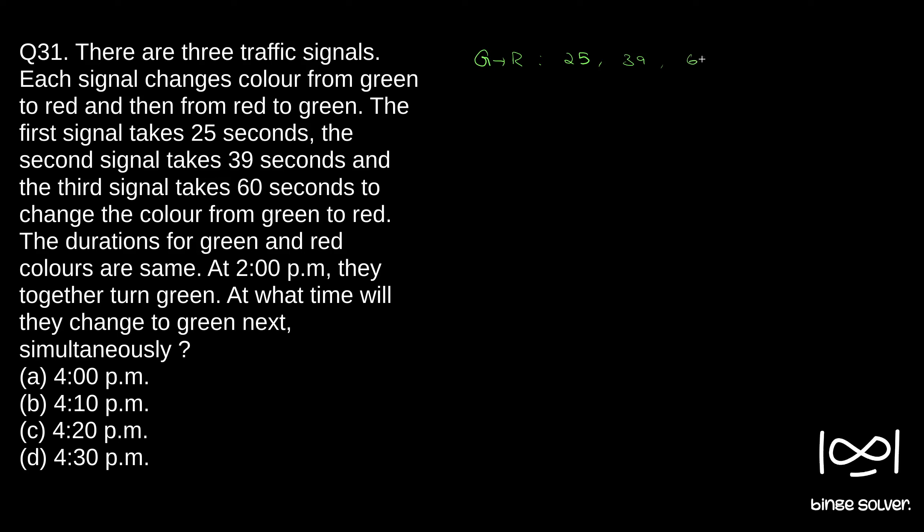Respectively for each signal, second signal, and third signal. So total time it takes for each signal to go from green to red and red to green will be 50 seconds, 39 into 2 that is 78 seconds, and 120 seconds. This is the time it takes for each signal to complete the full cycle. So it is given at 2 p.m.